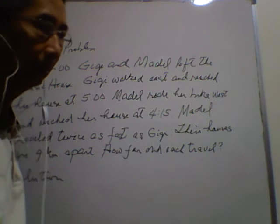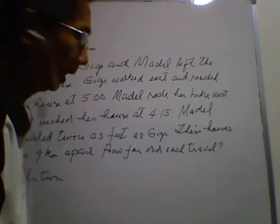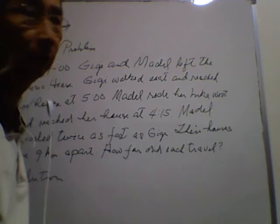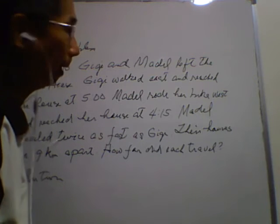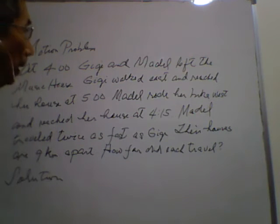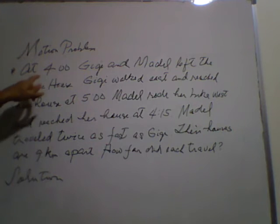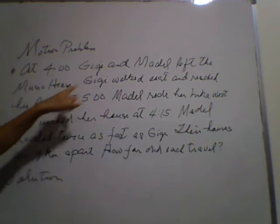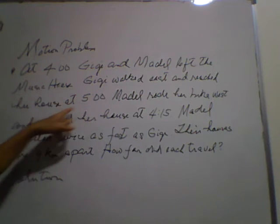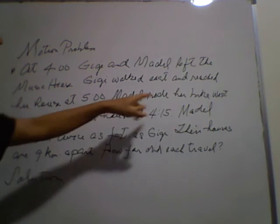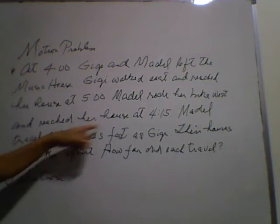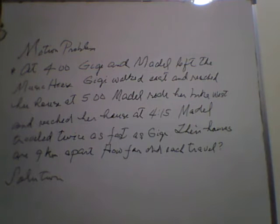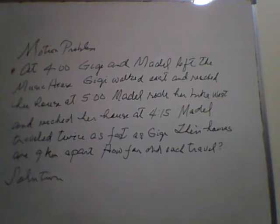Good morning. It's Serenity Day today and we're going to discuss two problems about motion. The first one states that at 4 o'clock, Gigi and Madel left the music house. Gigi walked east and reached their house at 5 o'clock. Madel rode her bike west and reached their house at 4:15. Madel traveled twice as fast as Gigi. Their houses are 9 kilometers apart. How far did each travel?